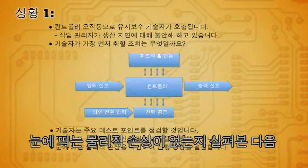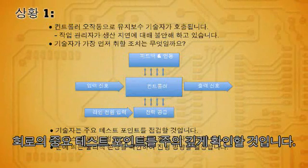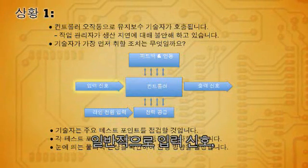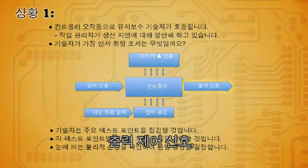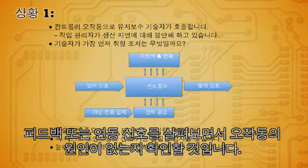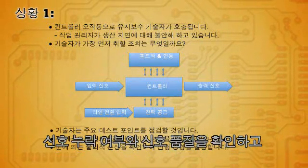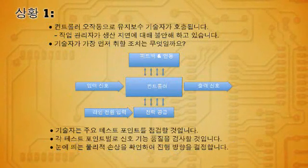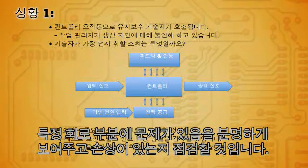After checking for any obvious physical damage, you'll want to take a look at the circuit at a high level, looking at key test points. Typically you're looking at the input signal, the output control signals, the power supplies, and any feedback or interlock signals that might be causing the malfunction. You'll be checking for any missing signals and looking at the quality of the signals, checking for anything obvious that could point you to a problem on any part of the circuit.